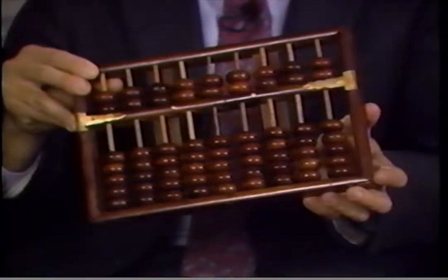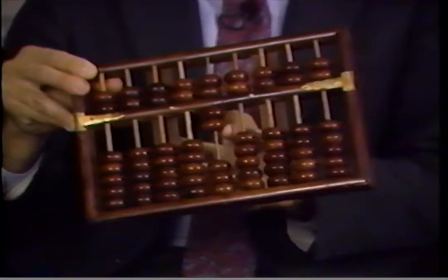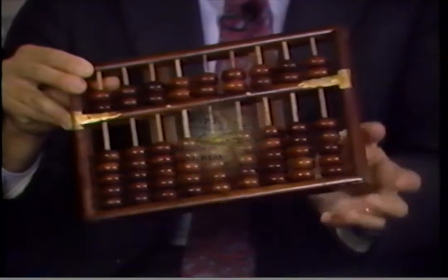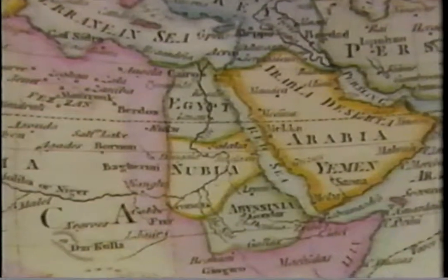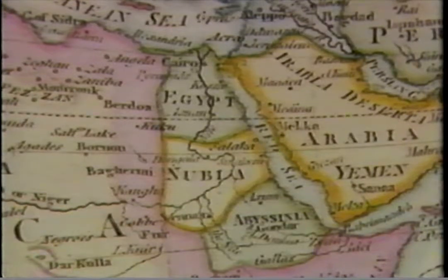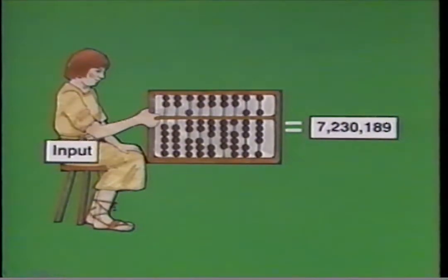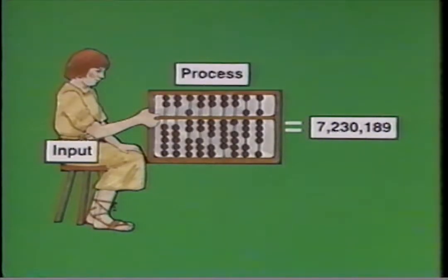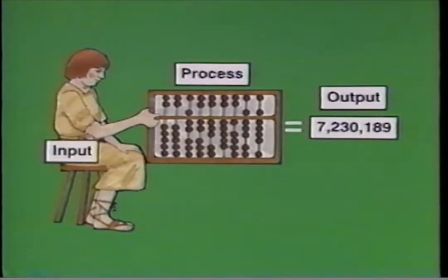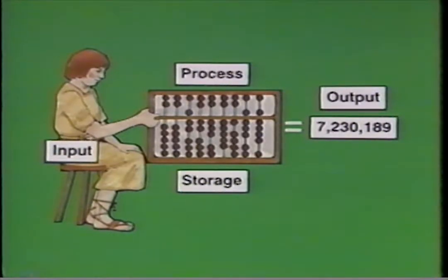One of the first machines developed for this purpose was the abacus, an instrument used for calculating numbers by sliding counters along rods within a frame. The origins of the abacus date back to 500 B.C. in Egypt, but they were developed and used extensively in eastern countries including China and Japan. The abacus helped process numbers and showed the output or results, and could even store information temporarily until numbers were transferred to paper.